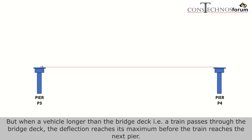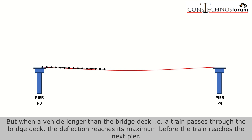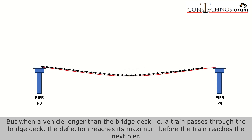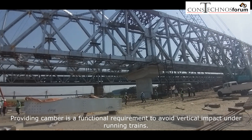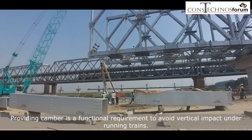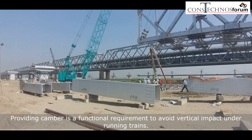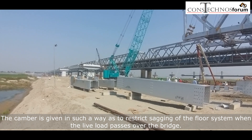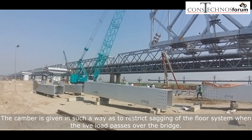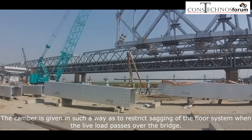When a vehicle longer than the length of the bridge deck — that is, a train — passes through the bridge deck, the deflection reaches its maximum before the train reaches the next pier. The result is that a train moving at high speed may experience shock and derailment. Providing camber is a functional requirement to avoid vertical impact under running trains. Camber is given in such a way as to restrict sagging of the floor system when the live load passes over the bridge.